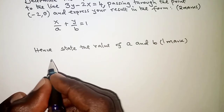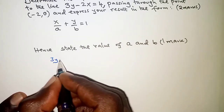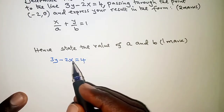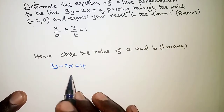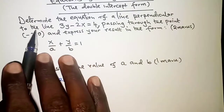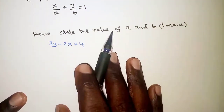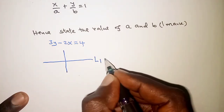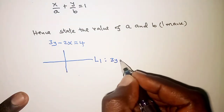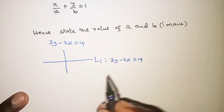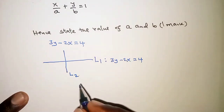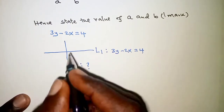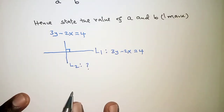We are given the equation 3y minus 2x equals 4. This represents the equation of a line that is perpendicular to the line whose equation we are asked to determine. We have two lines — let's call this Line 1, whose equation we are already given as 3y minus 2x equals 4, and Line 2, whose equation we do not know.